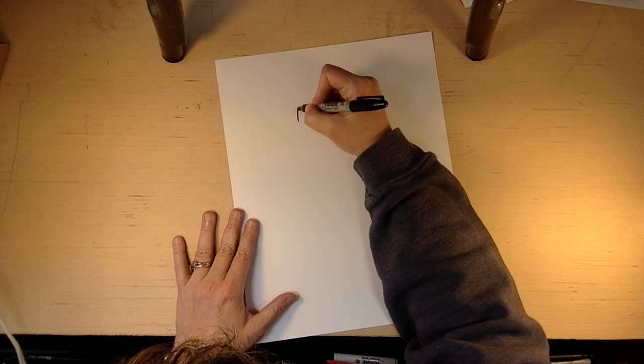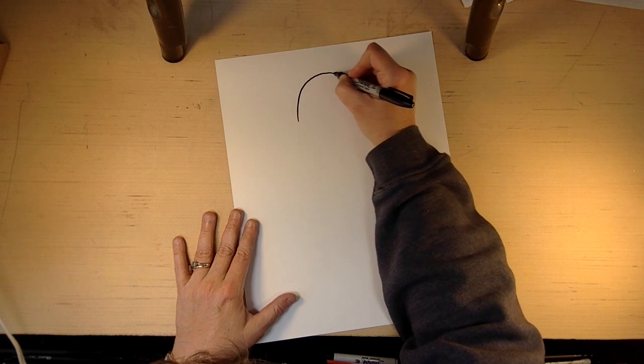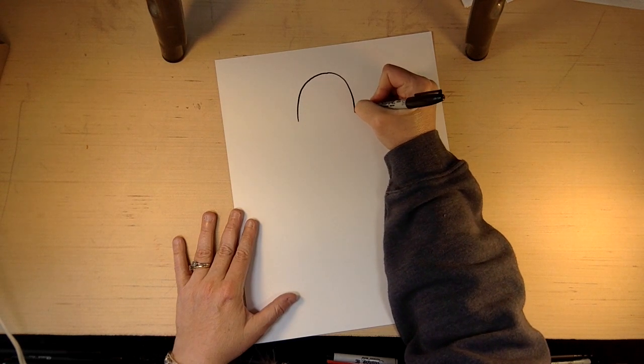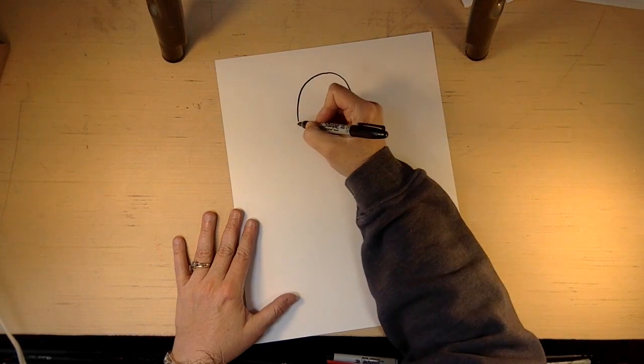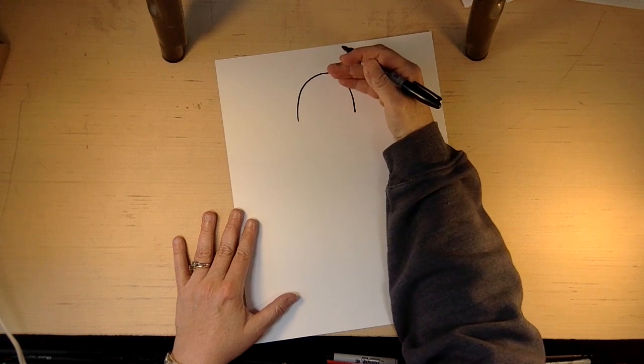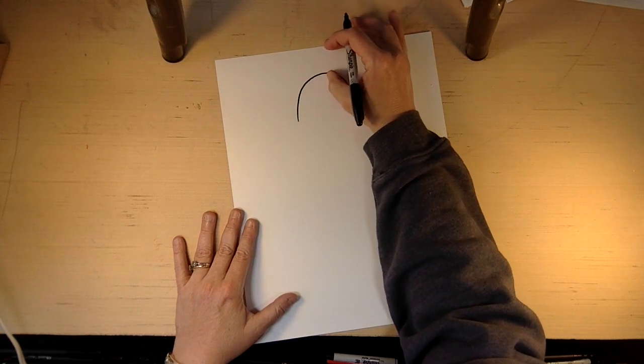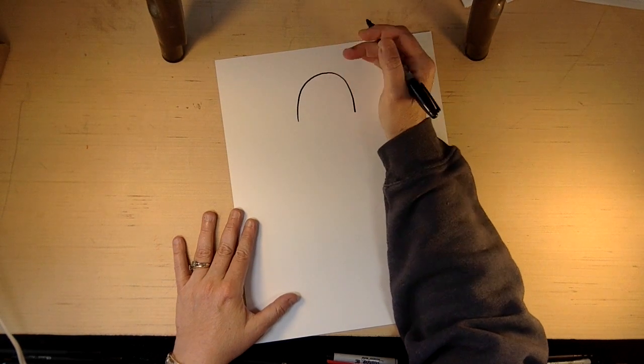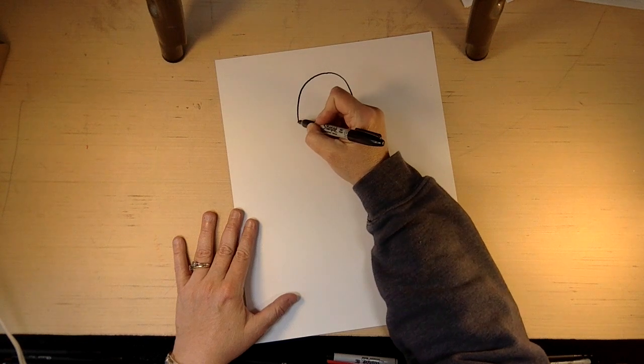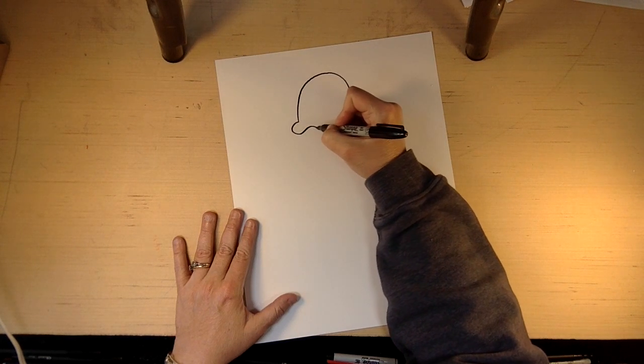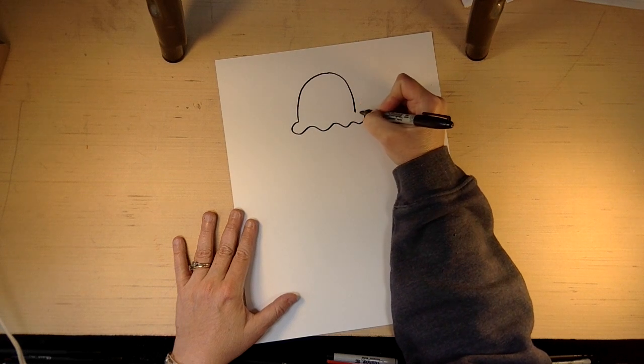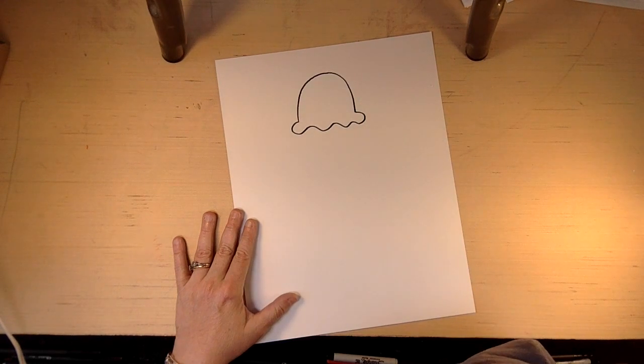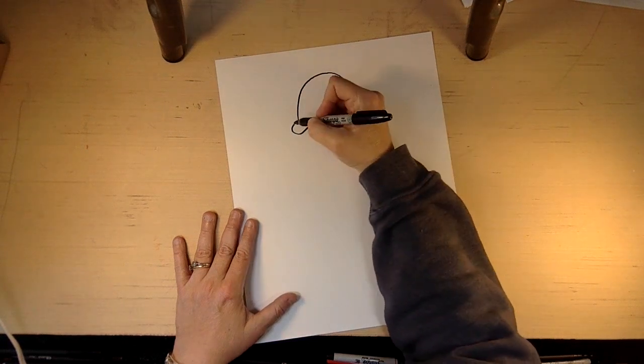So what we're going to do is we're going to draw an upside-down U, like this. An upside-down U, and we're drawing it towards the top of the page. We want a little bit left on the top because we're going to put a cherry on top, but we are going to go all the way across the bottom with a wiggle line, like this. So it looks like a hat, almost.